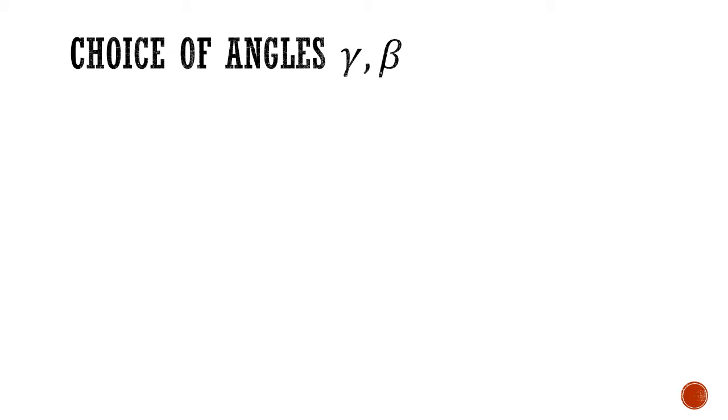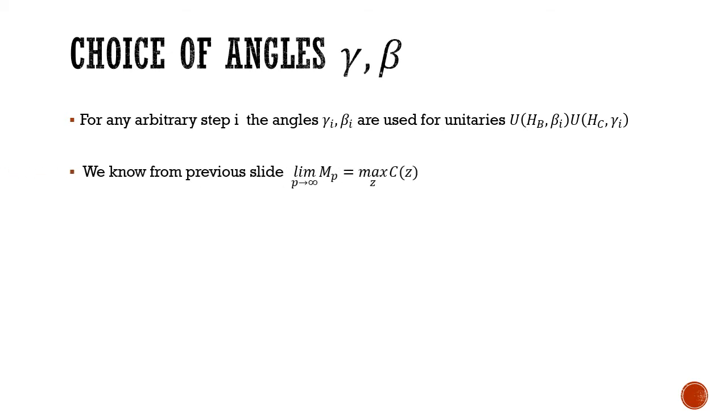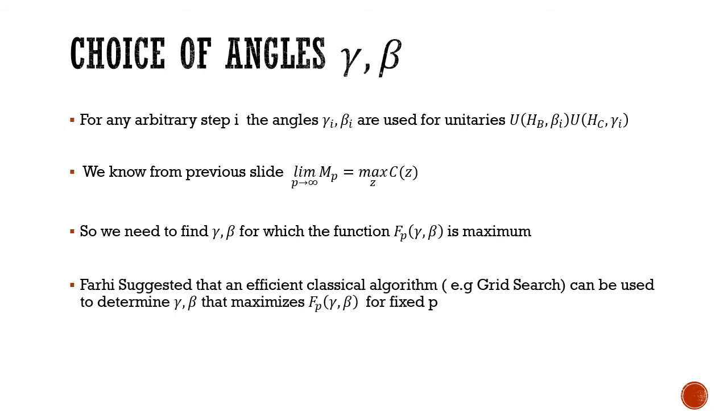The second question is, how do we obtain gamma and beta? How do we decide on the angles gamma and beta? For an arbitrary step in the process of QAOA circuit where the angles are gamma_i and beta_i, and unitaries are U(Hp, beta_i) and U(Hc, gamma_i), we know from the previous slide that the max M_p is C(z)_max. We need to find angles gamma and beta for which the function F_p could be maximum. There are no fixed methods to find these gamma and beta for a QAOA circuit. However, the creators of this algorithm, Farhi and Gutmann, suggested that we can use a classical algorithm to evaluate gamma and beta, and one such classical algorithm is grid search for a fixed number of P, which is a finite cutoff.